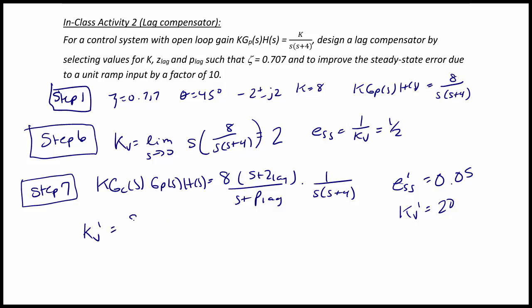And we get 8 times z lag over p lag times 4 which equals 2 z lag over p lag. And at this point we need to pick a value so I'm going to let p lag equal 0.1 which yields a z lag of 1.